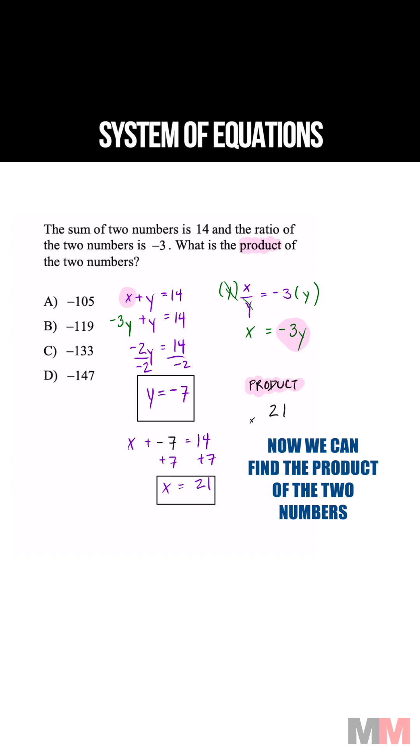What is the product? 21 times negative 7. You really only have to do this part of the multiplication, which is going to end up with a 7. And the only one with a 7 in the ones place is letter choice D.